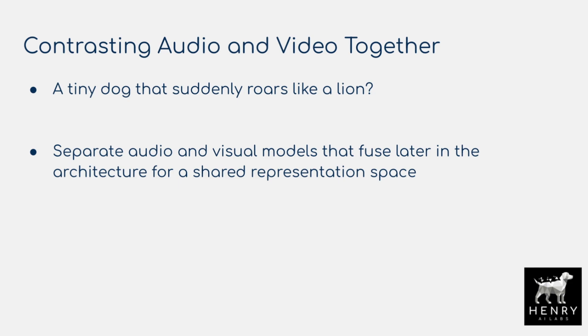We start off with this idea of contrasting audio and video together. We have audio files that pair with video data in things like UCF 101 action recognition, where you have a video of a person playing tennis and you have the sound of hitting the tennis ball or baseball. You wouldn't expect a tiny dog to suddenly roar like a lion — these ideas of pairing audio information with visual information in a video data stream.